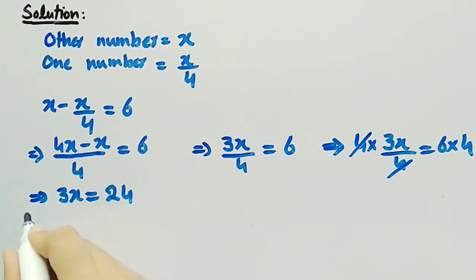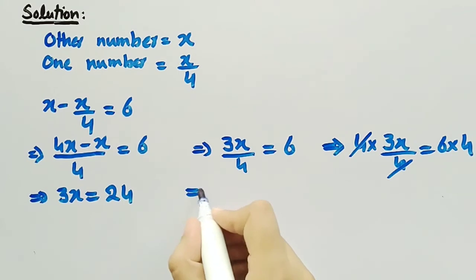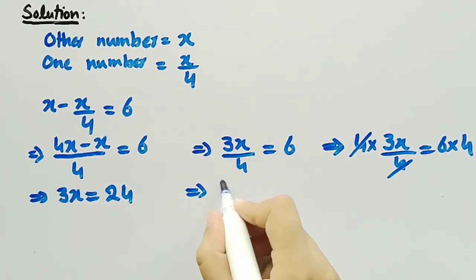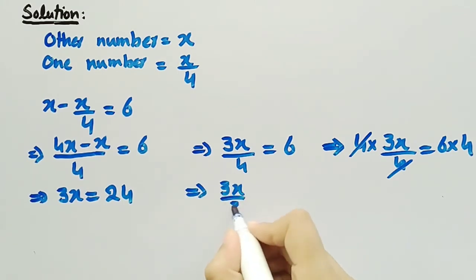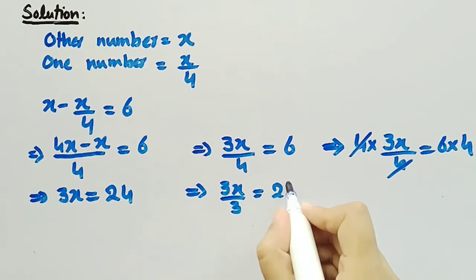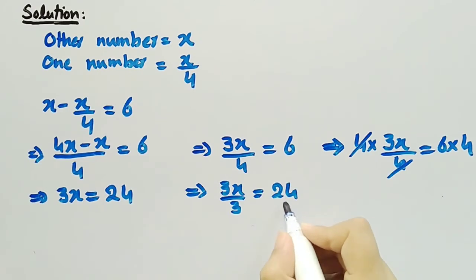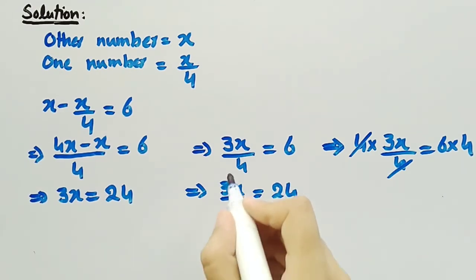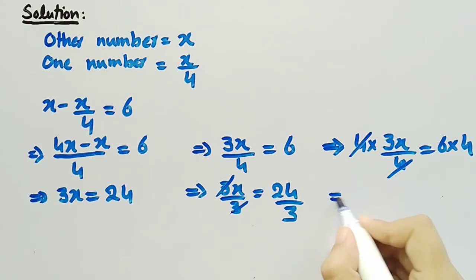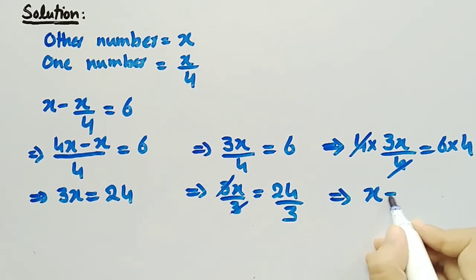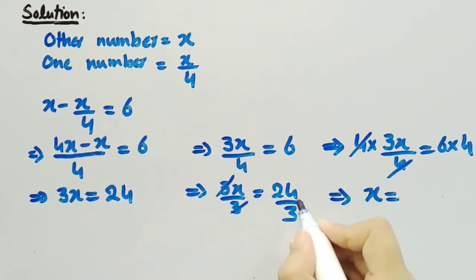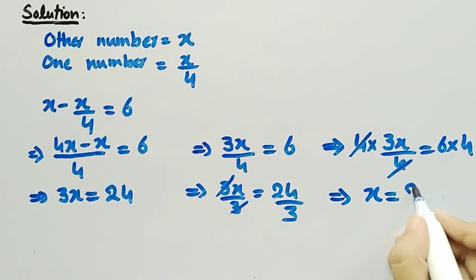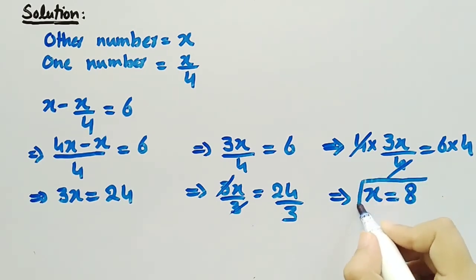Now, by dividing both sides by 3, we get 3x divided by 3 equal to 24 divided by 3. This 3 will be cancelled out and we are left with x equal to 24 divided by 3, which is equal to 8. So we have got x equal to 8.